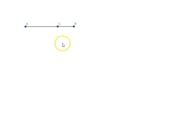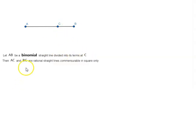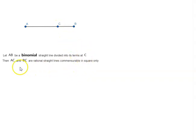Let us see how we can prove that there is only one point at which AB can be divided into its terms. Let AB be a binomial straight line divided into its terms at C. Then AC and BC are rational straight lines commensurable in square only. What the proposition is saying is that this is the only point at which AB can be divided into two terms which are rational straight lines commensurable in square only.